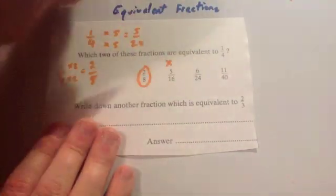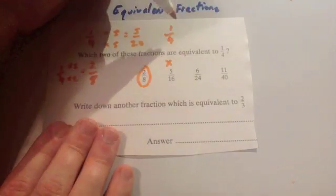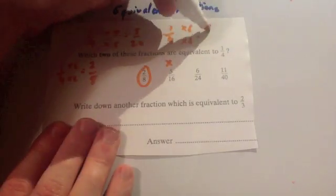Next one, 6 over 24. Well, if I've got a quarter, to get the 6 on the top line I would need to times by 6 and times the bottom number by 6 as well. 1 times 6 is 6 and 4 times 6 is 24. Oh, so that is an equivalent fraction.